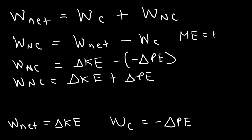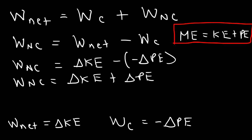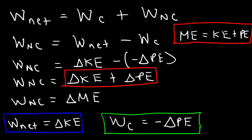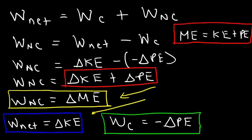Mechanical energy is the sum of the kinetic and potential energy of the object. Therefore, the sum of the change in kinetic energy plus the change in potential energy equals the change in mechanical energy. You want to know these three important formulas: the change in kinetic energy equals the net work done on the object; the work done by all conservative forces equals the negative change in potential energy; and note that potential energy can only be defined for conservative forces. The work done by all non-conservative forces equals the change in mechanical energy of the object.